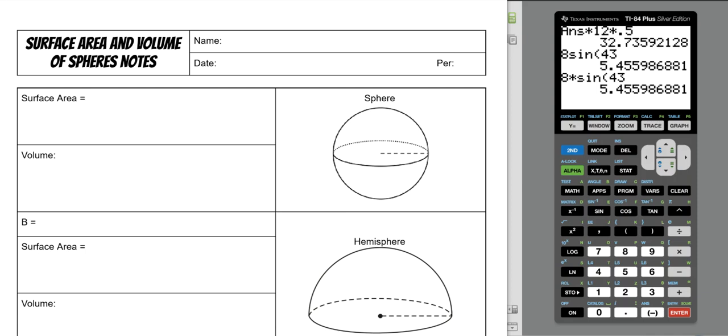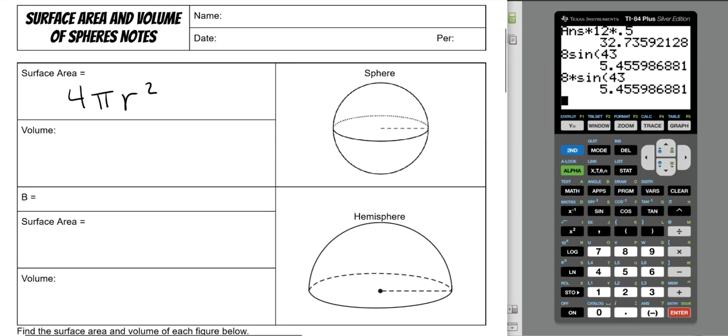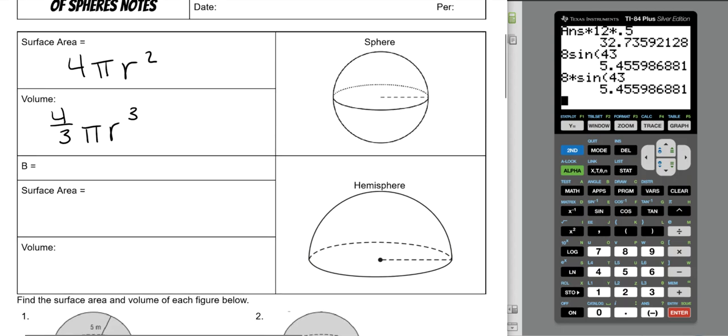Today we're going over surface area and volume of spheres. The surface area of a sphere is 4πr². There is no lateral surface area for a traditional sphere. The volume is 4/3πr³. You just need to know what the radius is in order to deal with spheres.